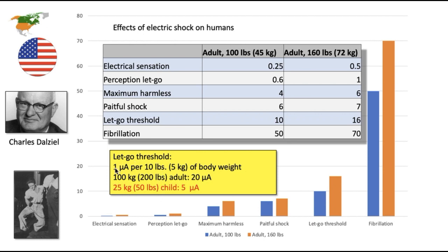Another thing of note is that they figured out that it's a function of the person's weight. So it's 1 milliamp per 10 pounds or 5 kilograms of body weight. Which means that a 100 kilo person, or 200 pound person, for them, the let go threshold is 20 milliamps. But for a 50 pound child, 25 kilograms, it's only 5 milliamps.